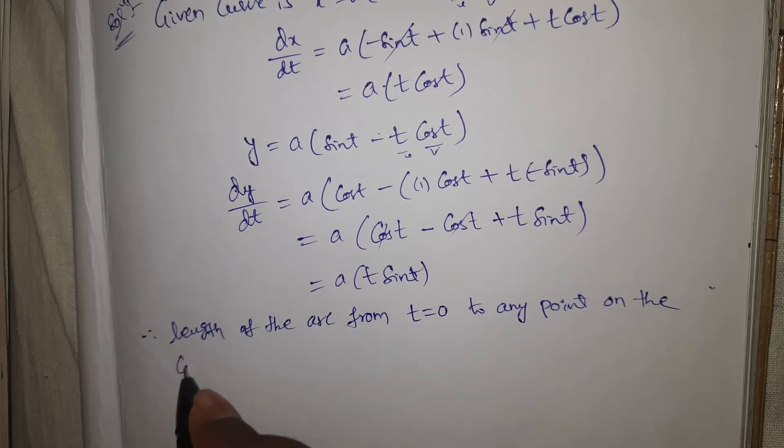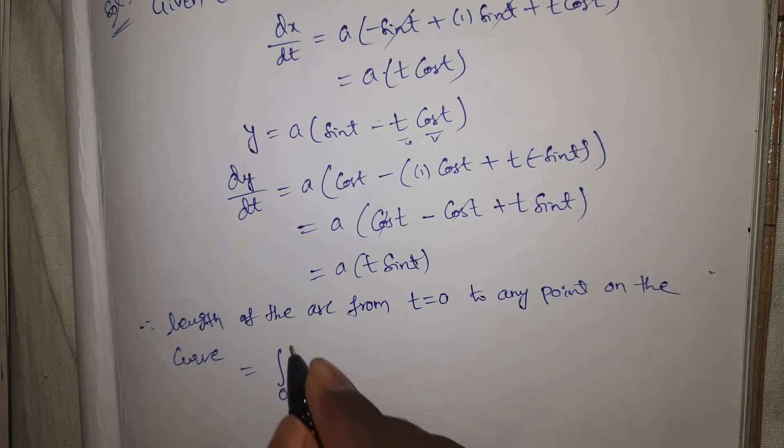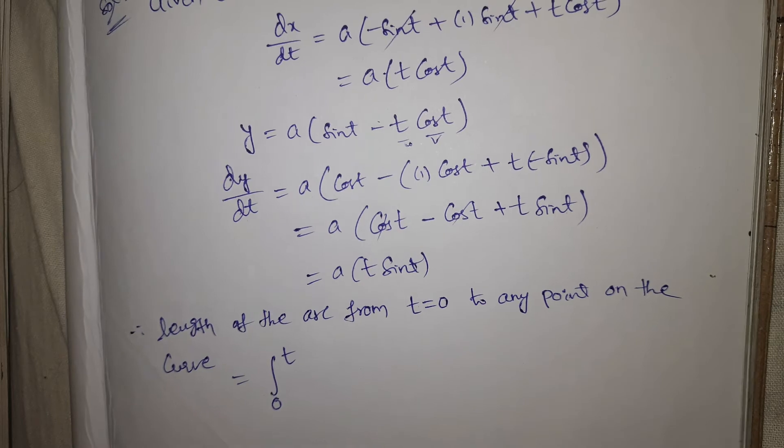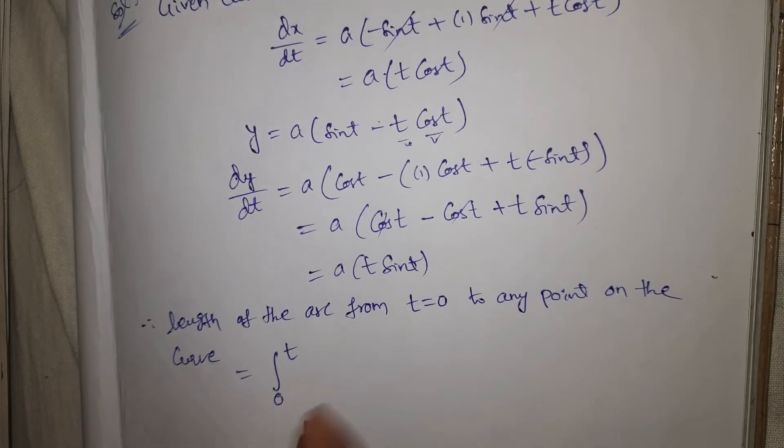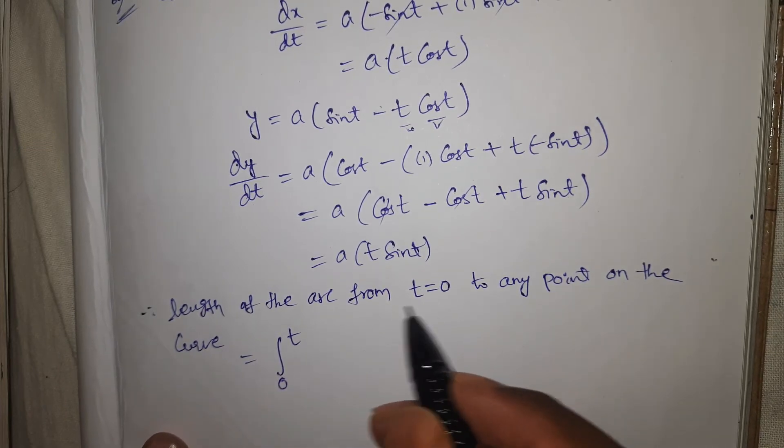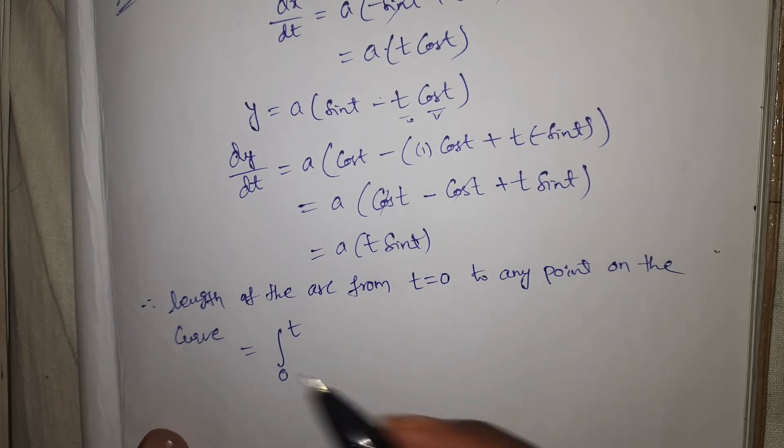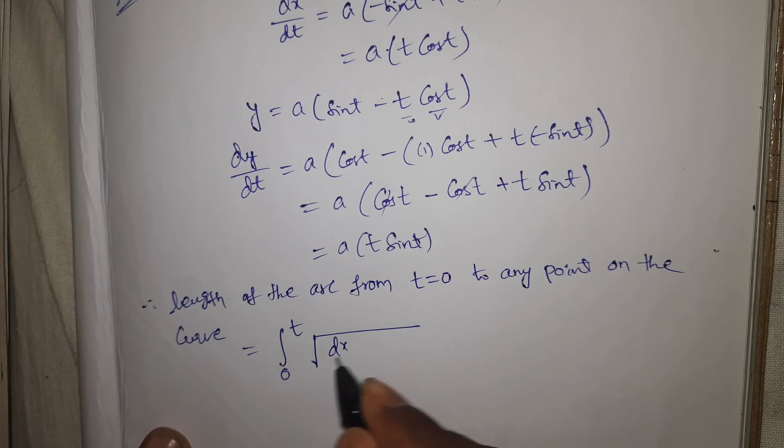Upper limit is not mentioned in this question, so we have to take 0 to t. From t = 0 to any point on the curve, we take up to t. That equals the integral of √[(dx/dt)² + (dy/dt)²] dt.